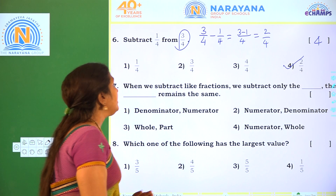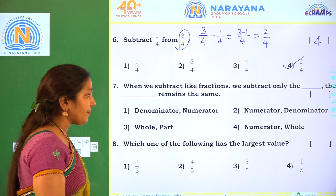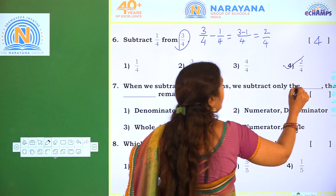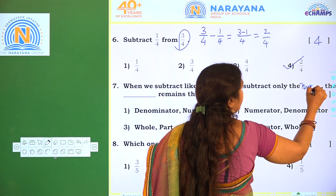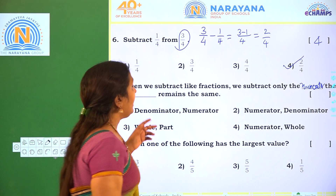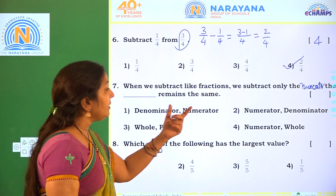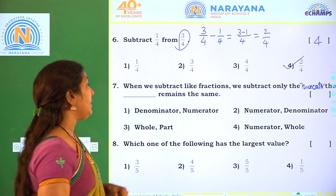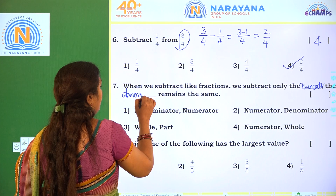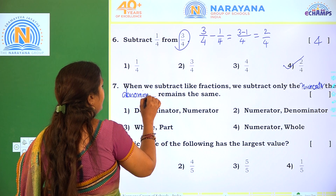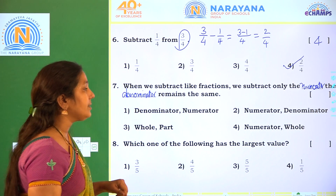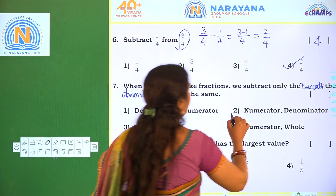Next one. When we subtract like fractions, we subtract only the numerators, then we write the denominator the same — the denominator remains the same. The correct option is Option 2.